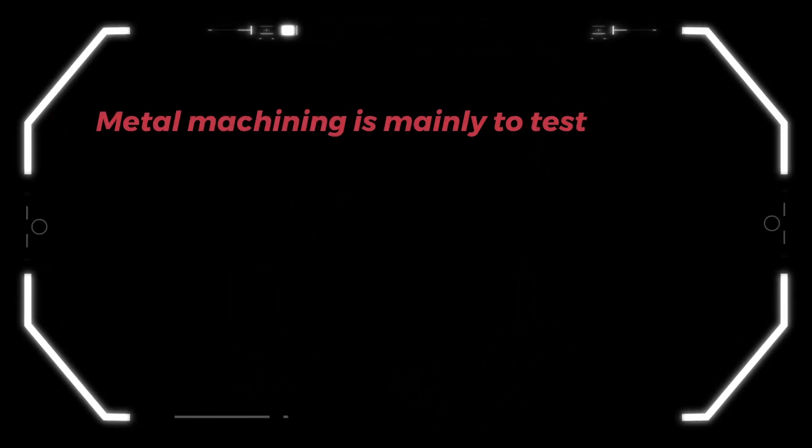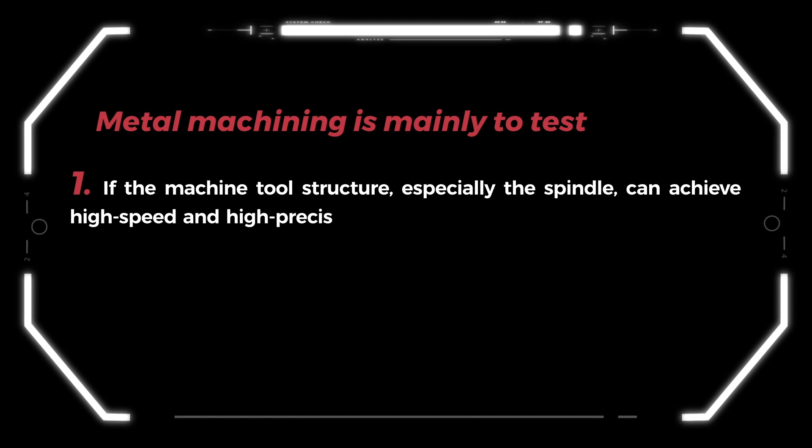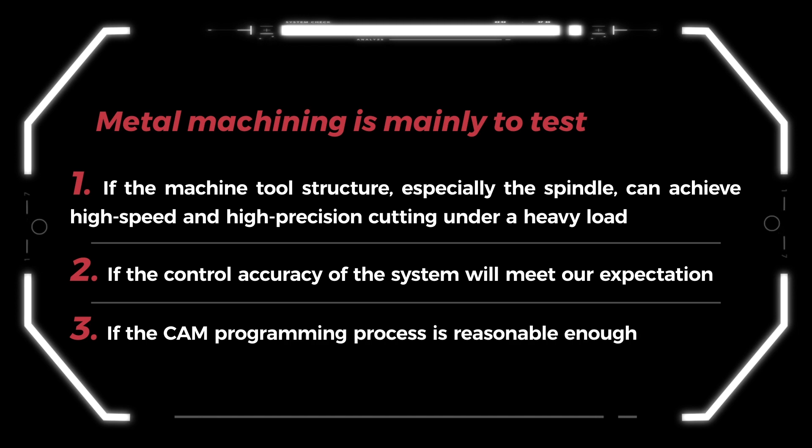Metal machining is mainly to test: 1. If the machine tool structure, especially the spindle, can achieve high-speed and high-precision cutting under heavy load. 2. If the control accuracy of the system will meet our expectation. 3. If the CAD programming process is reasonable enough.